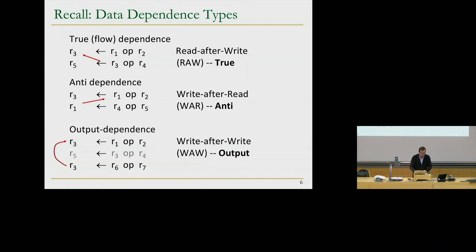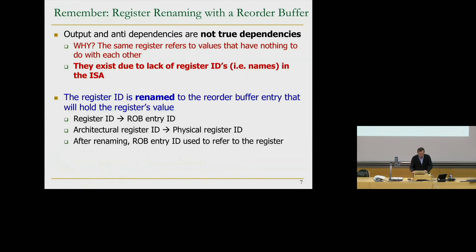What we did with the reorder buffer is eliminating those false dependencies through renaming. There's no data flow relationship between instructions sharing a register name for output dependencies either — the R3 in each case refers to completely different things. Essentially, what we've done is mapped the architectural register ID to a reorder buffer entry ID — you can think of this as mapping an architectural register ID to a physical register ID. After renaming, the reorder buffer entry ID is used to refer to that register.